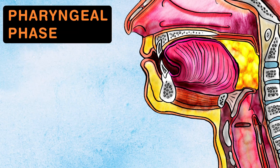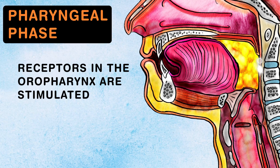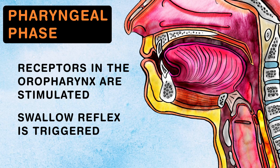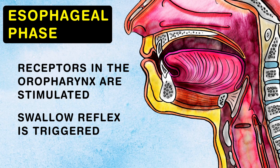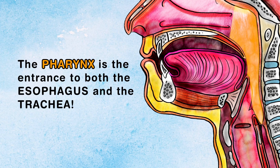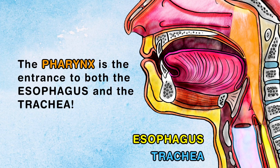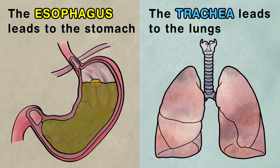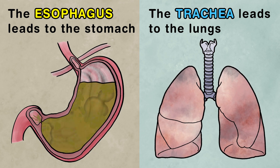The pharyngeal phase begins when receptors in the oropharynx are stimulated. This triggers initiation of the swallow reflex, which is involuntary. This part of swallowing must be coordinated perfectly, because the pharynx is the entrance to both the esophagus and the trachea. While the esophagus leads to the stomach, the trachea leads to the lungs.